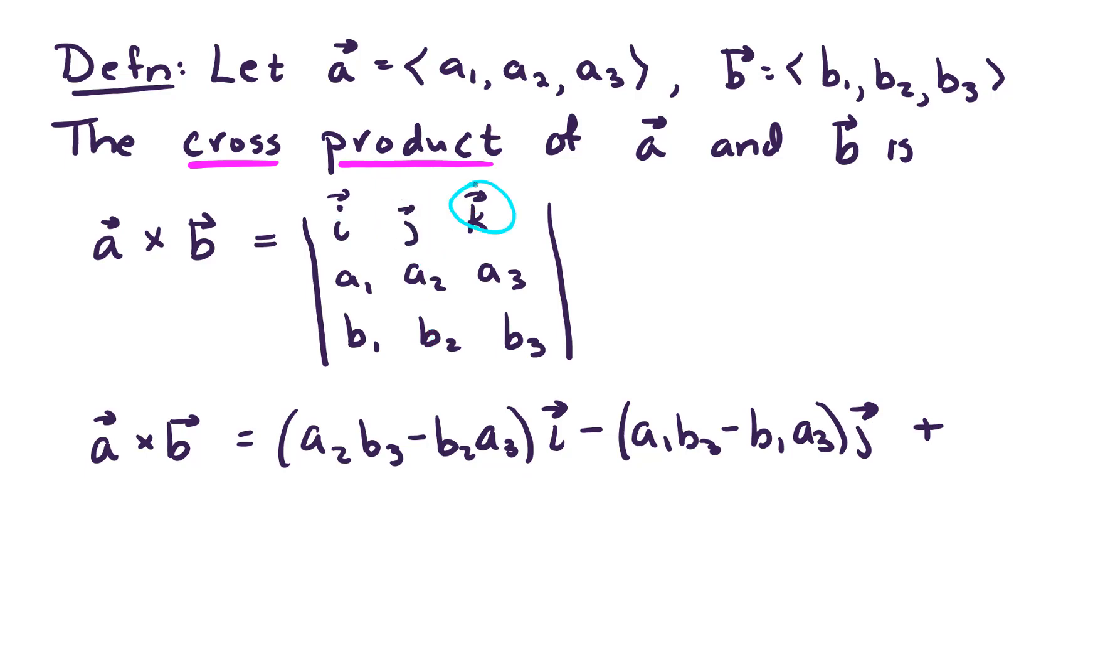For our K component, we will have A1, B2 minus B1, A2 times K. So that's the definition of our cross product. And I'd like to do an example.